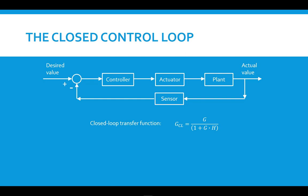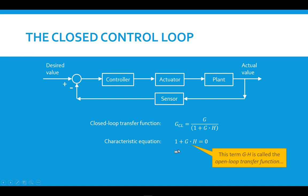I also worked out in a previous video what the closed loop transfer function is. From the closed loop transfer function, we can get the denominator of that function and set it equal to zero — that's called the characteristic equation of the system. Notice that in the characteristic equation, there's a term G times H, and this is called the open loop transfer function. So we actually have the open loop transfer function as a component of the characteristic equation which belongs to the closed loop system.